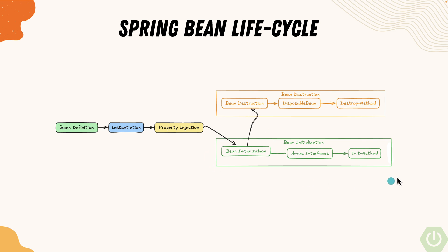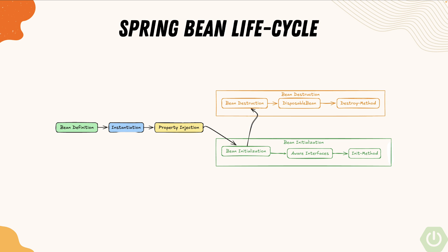This is the bean initialization part where the entire initialization of the bean happens. Once the bean has done its work, it has to be taken down — similar to garbage collection — and Spring Boot takes care of that for you as well. The bean destruction happens here: the bean is disposed of and the destroy callback method is called. That entire lifecycle is managed for you using either annotations, Java-based code, or XML configuration in Spring Boot. These concepts are essential for us to understand as we start writing automation tests.